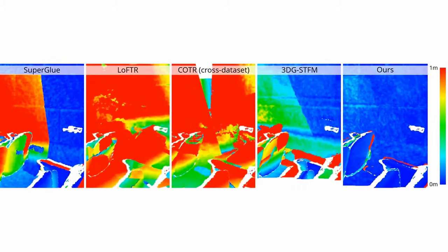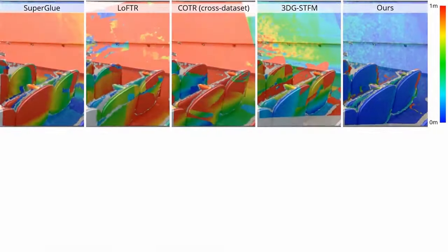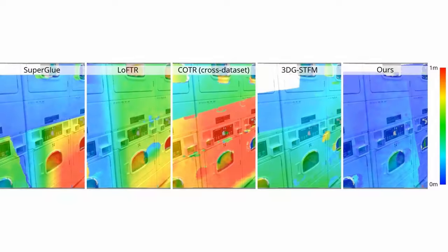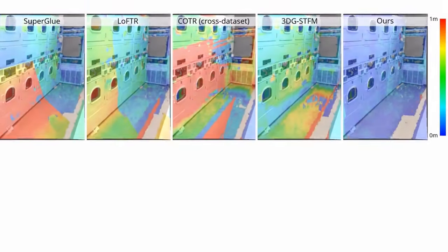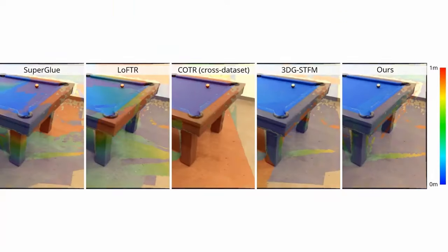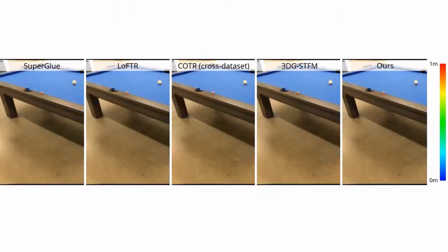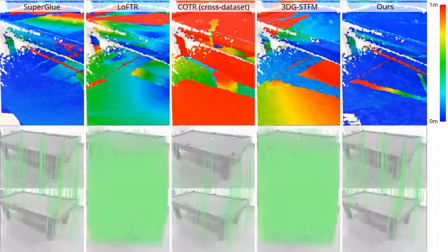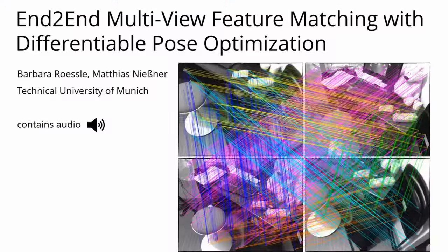We visualize the reprojection error by projecting the ground truth depth maps using the estimated poses. Our method produces fewer outliers and performs better in the presence of repetitive patterns. Our multi-view approach enables correct matches even across large viewpoint changes. Thank you for watching!